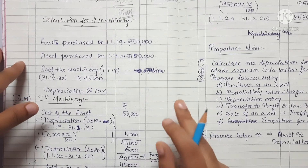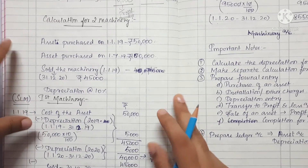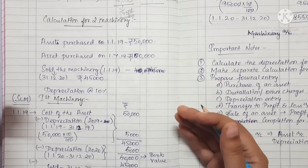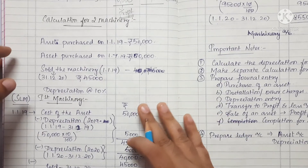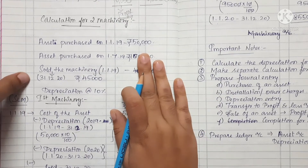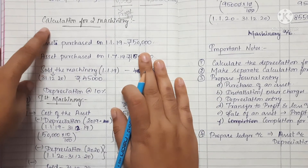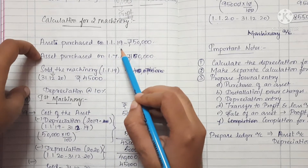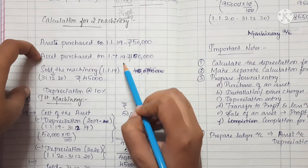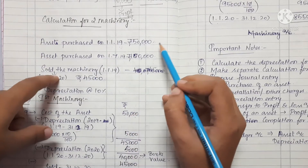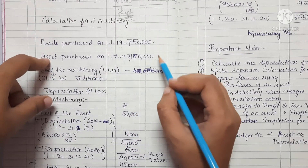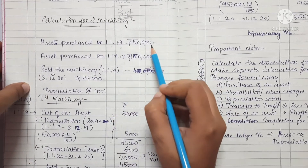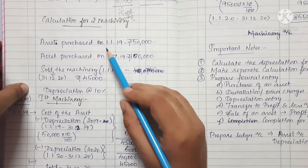If we look at the two assets, we will see how we calculate depreciation in this video. If we look at the calculation for two assets, we will see a first asset dated 1-1-19 and one asset dated 1-7-19. The first asset amount is 50,000 and the second asset is 1 lakh.